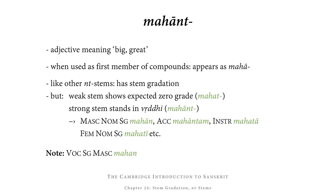The last NT stem to look at is the adjective mahānt, meaning 'big' or 'great.' When used as the first member of a compound, it appears as mahā — so for example mahārāja, meaning 'great king.' Like other NT stems, mahānt has stem gradation, but whereas the weak stem has exactly the expected zero grade (mahat), the strong stem doesn't stand in guna but rather in vṛddhi: so we get mahānt, not mahant. The masculine nominative singular is mahān, the accusative is mahāntam, the dual mahāntau, the plural mahāntaḥ, and in the weak forms we get the expected zero grade: instrumental mahatā, dative mahate, and so on.